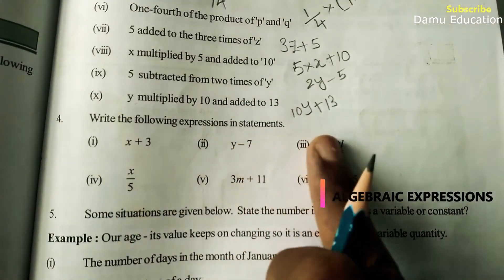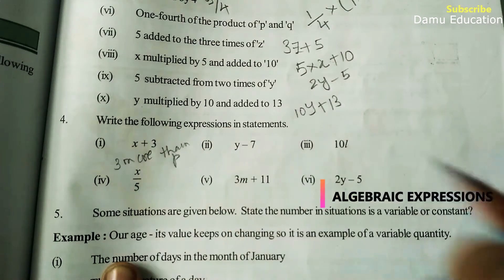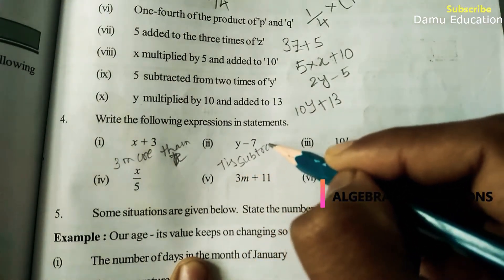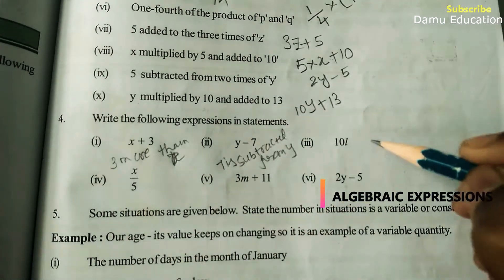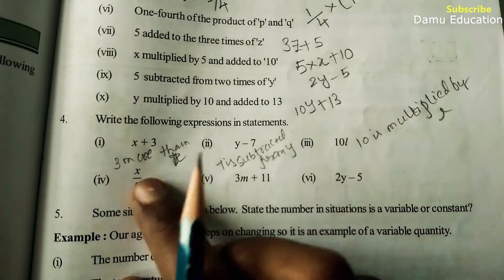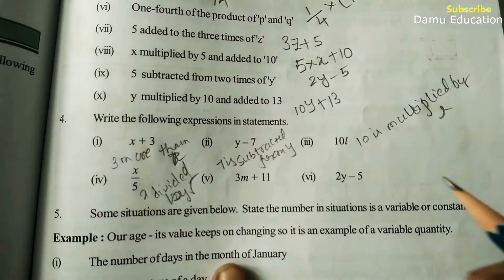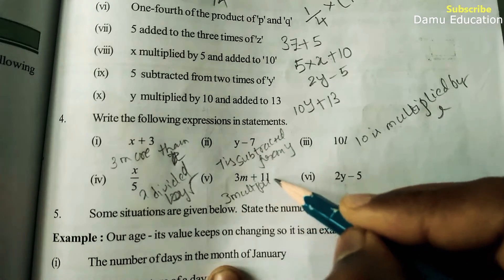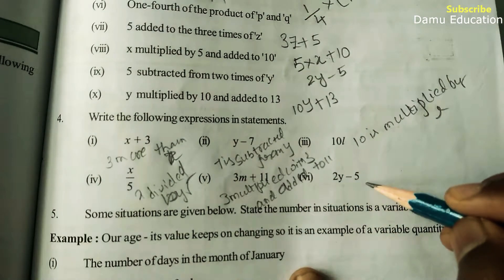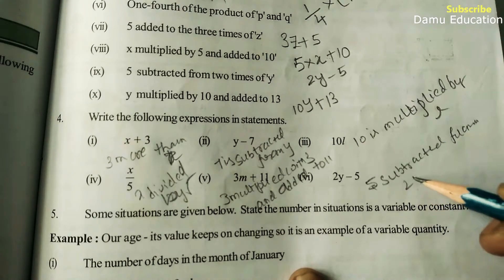Next question: write the following expressions as statements. x + 3 means 3 more than x. y − 7 means 7 is subtracted from y. L × 10 means 10 is multiplied by L. x ÷ 5 means x divided by 5. 3m + 11 means 3 multiplied with m and added to 11.